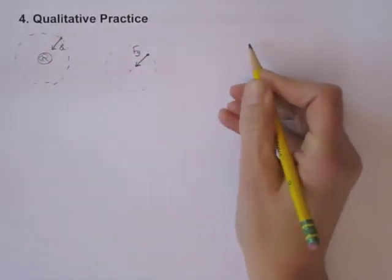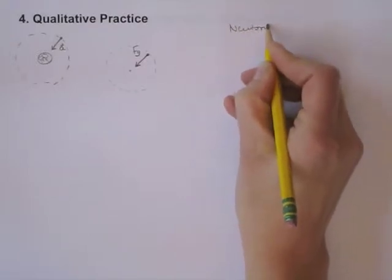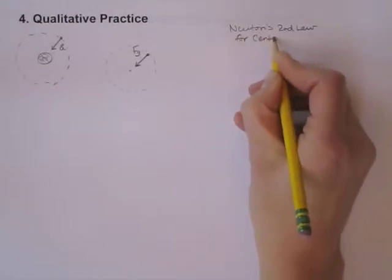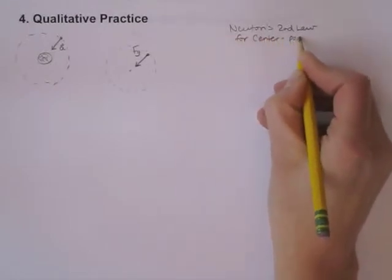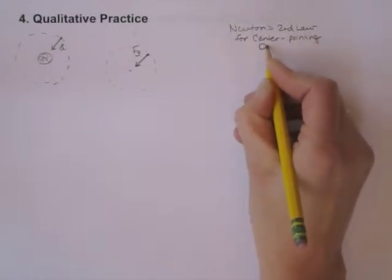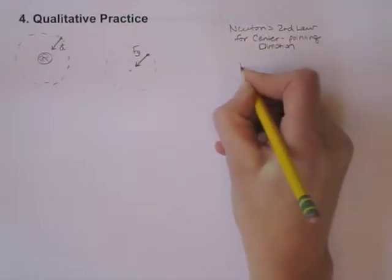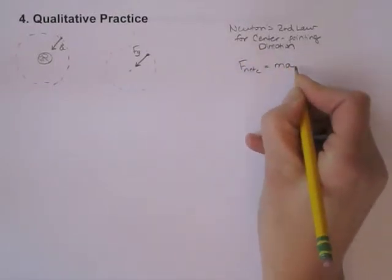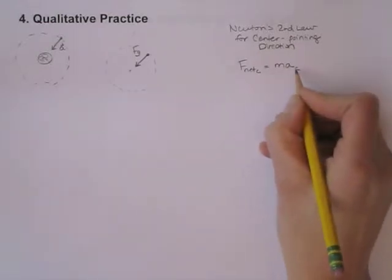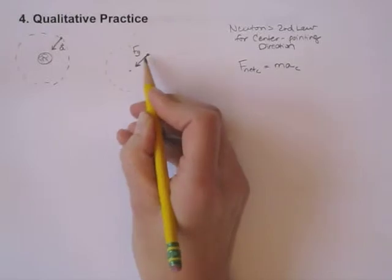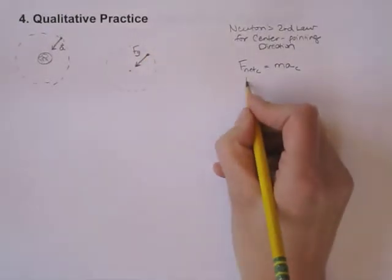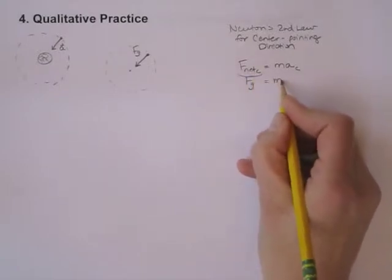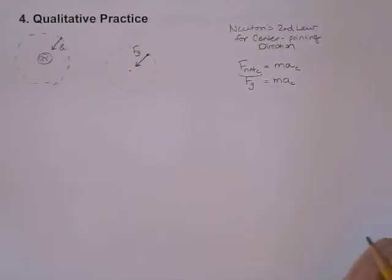And the last step is to write Newton's second law for the center pointing direction. So Newton's second law is F net equals ma, but we want to write it for the center pointing direction. So I'm going to put a little c here to mean center pointing. Well, what is my net force in the center pointing direction? I have only one force, so that would be Fg. So substitute that for your net force equals the mass times the acceleration, and that's the result.